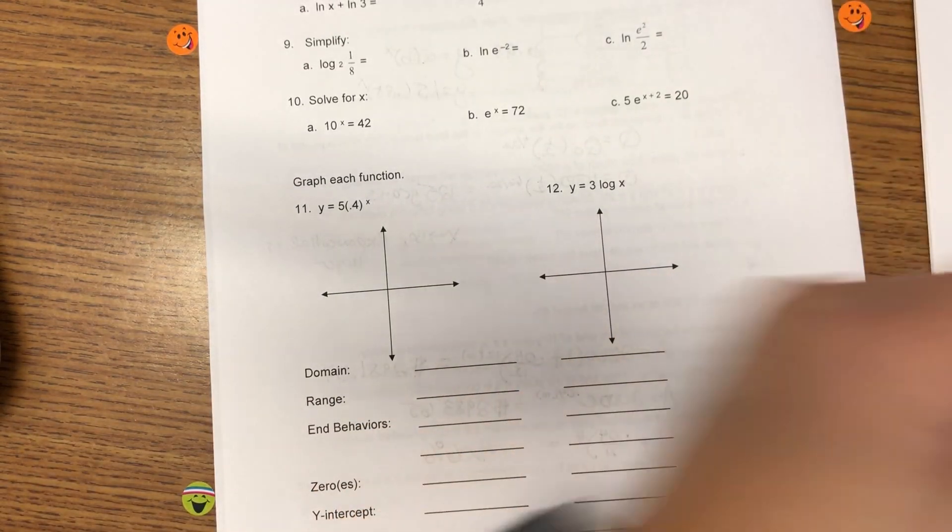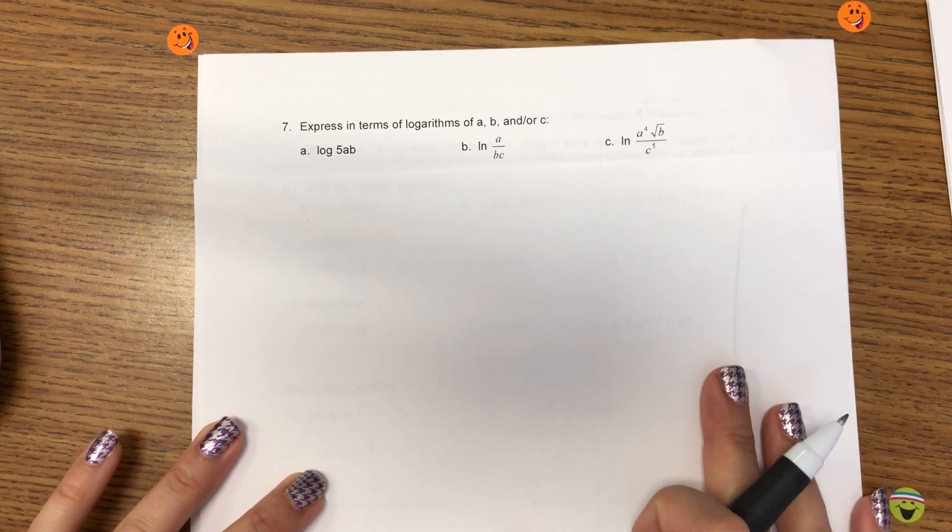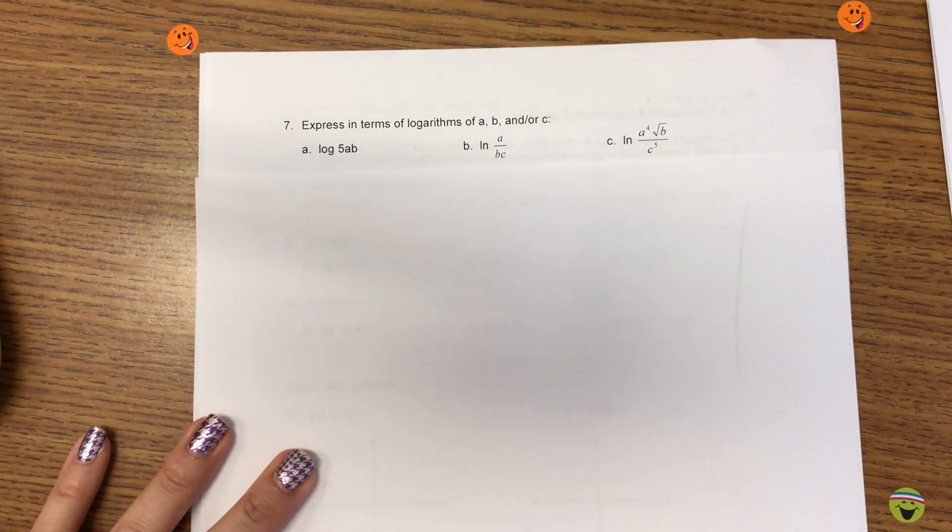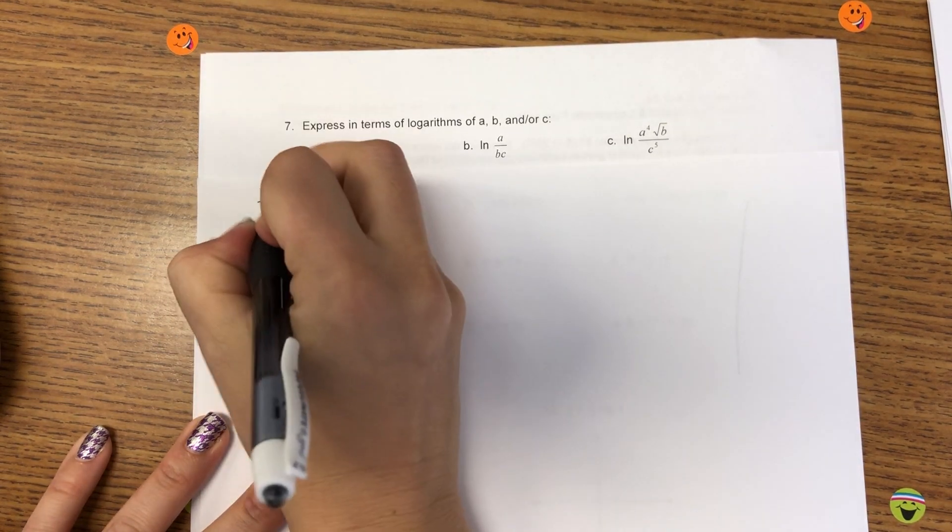Alright, to the back. Express. Express in terms of logs. I put my stickers there so I knew where my camera could see. Okay, express logs is A, B, and or C. So, we're going to use our properties.